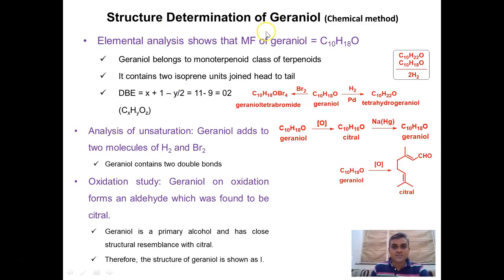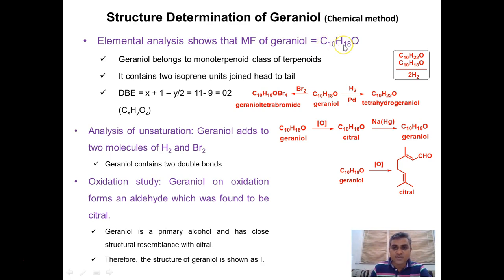Now let us discuss the structure of the geraniol molecule on the basis of chemical methods of analysis. In the earlier days chemists did not have sophisticated physical methods available and therefore they relied on chemical methods. The first step is the isolation of geraniol in very pure form from rose oil, after which it is subjected to various chemical reactions to arrive at the structure of the geraniol molecule. The first step in this investigation is the estimation of carbon and hydrogen, from which chemists derived the empirical formula and then the molecular formula of geraniol, found to be C10H18O.